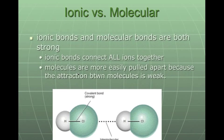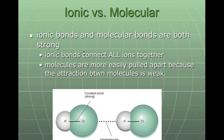Ionic versus molecular, or we can think of this as ionic versus covalent. Ionic bonds and molecular bonds are both strong, they're both becoming stable, but the ionic bond is connected with all of the ions. All those positives, all those negatives are lining up together. They're holding on to each other a lot better than the covalent because the covalent are easily pulled apart, and the attraction between each other is very weak.